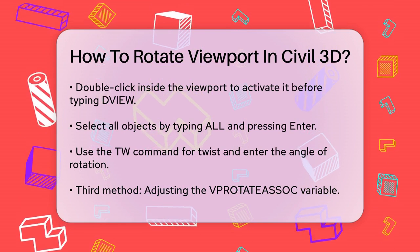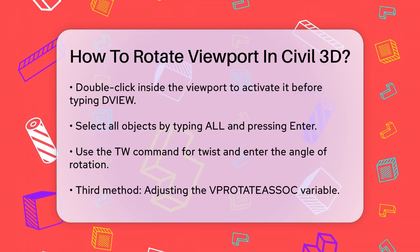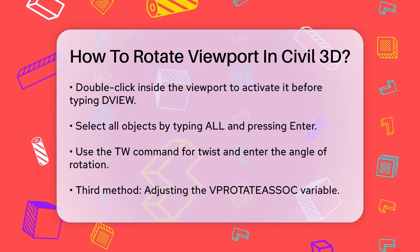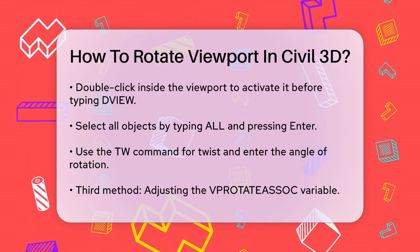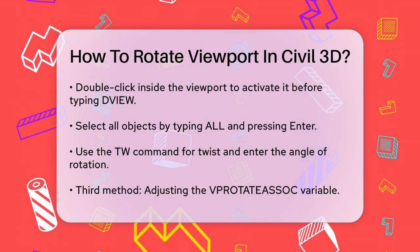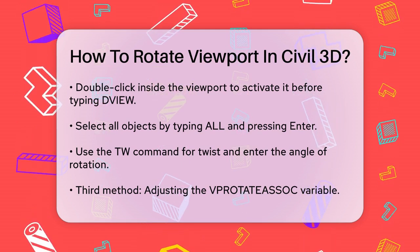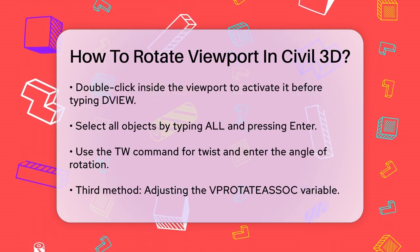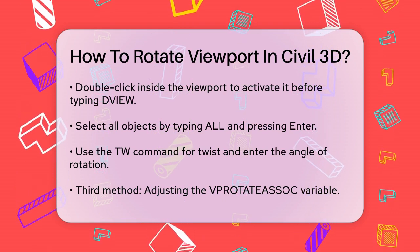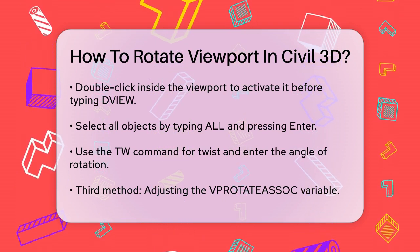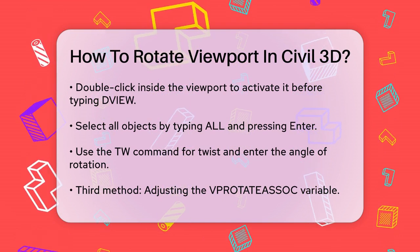A third method involves using the VPROTATEASSOC system variable. This is a bit quicker but still effective. First, ensure that the VPROTATEASSOC variable is set to 1 by typing VPROTATEASSOC and pressing Enter, then typing 1 and pressing Enter again. Now select the viewport you want to rotate, right-click, and choose the Rotate option. You can then specify the base point and the angle of rotation.